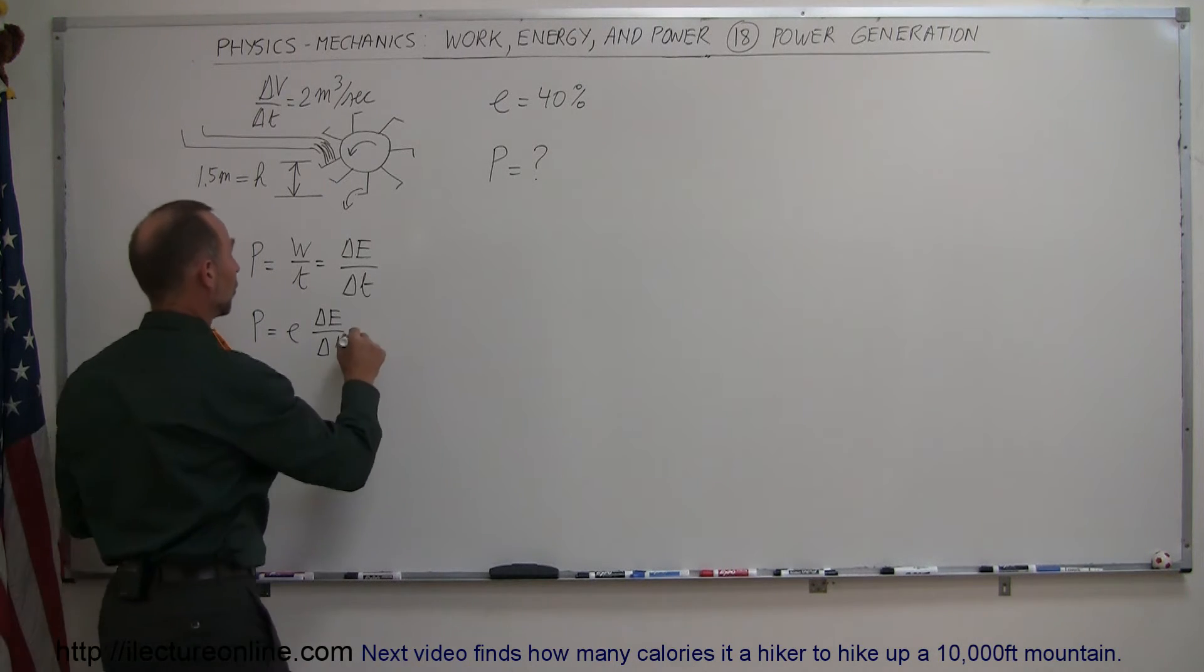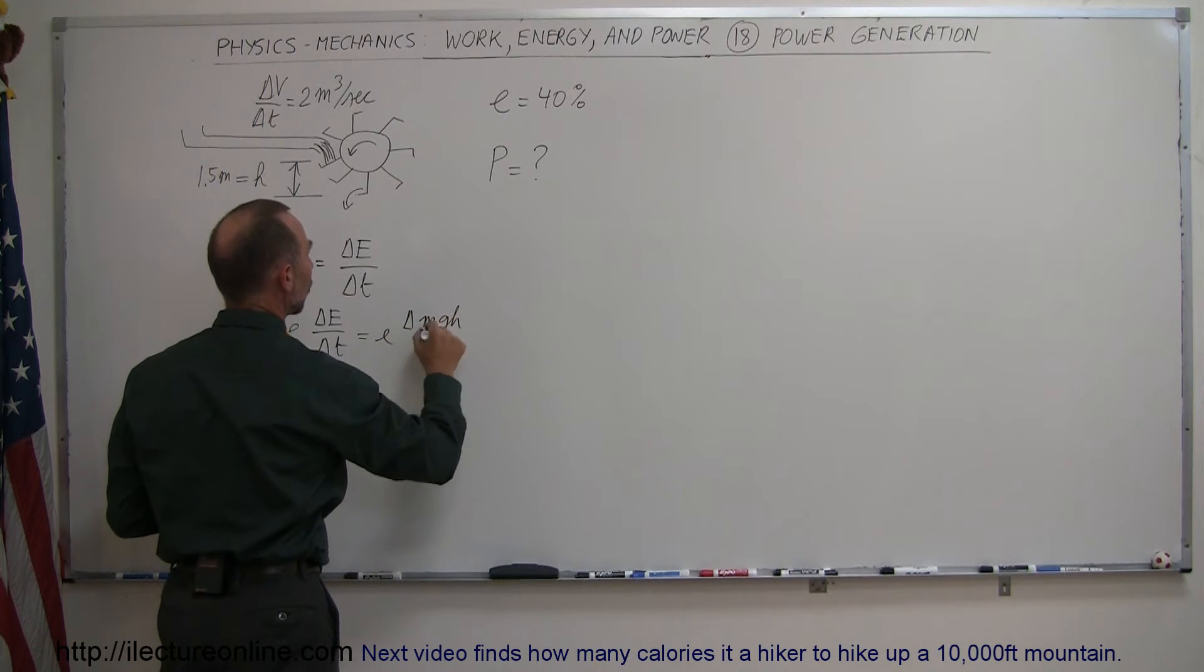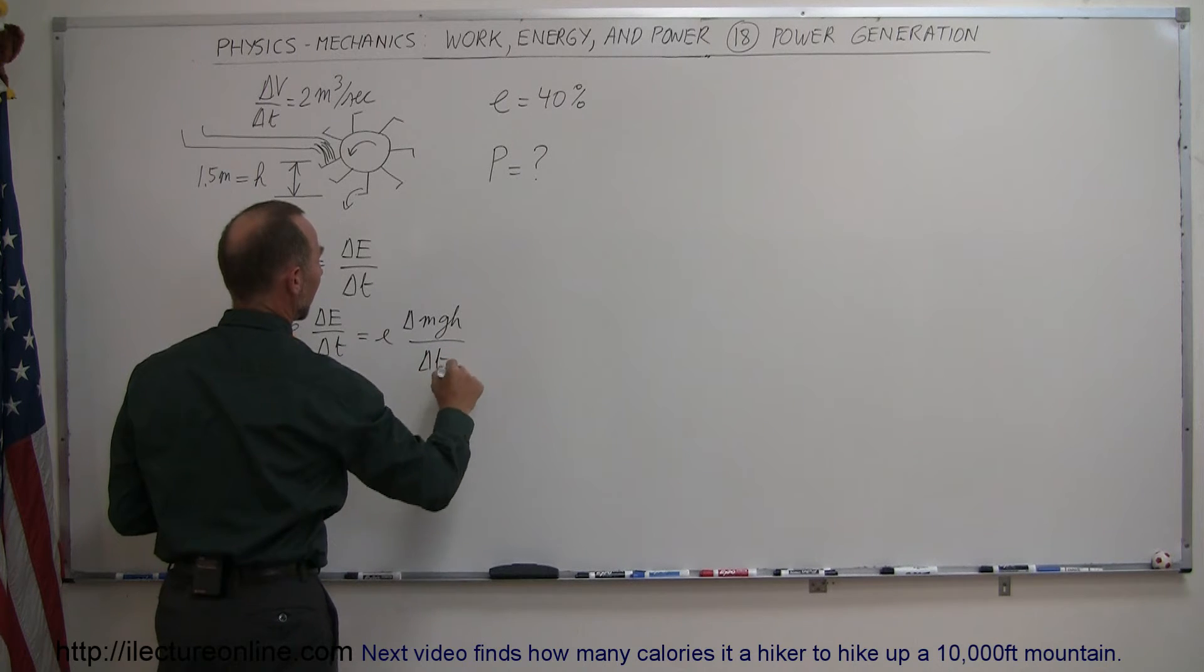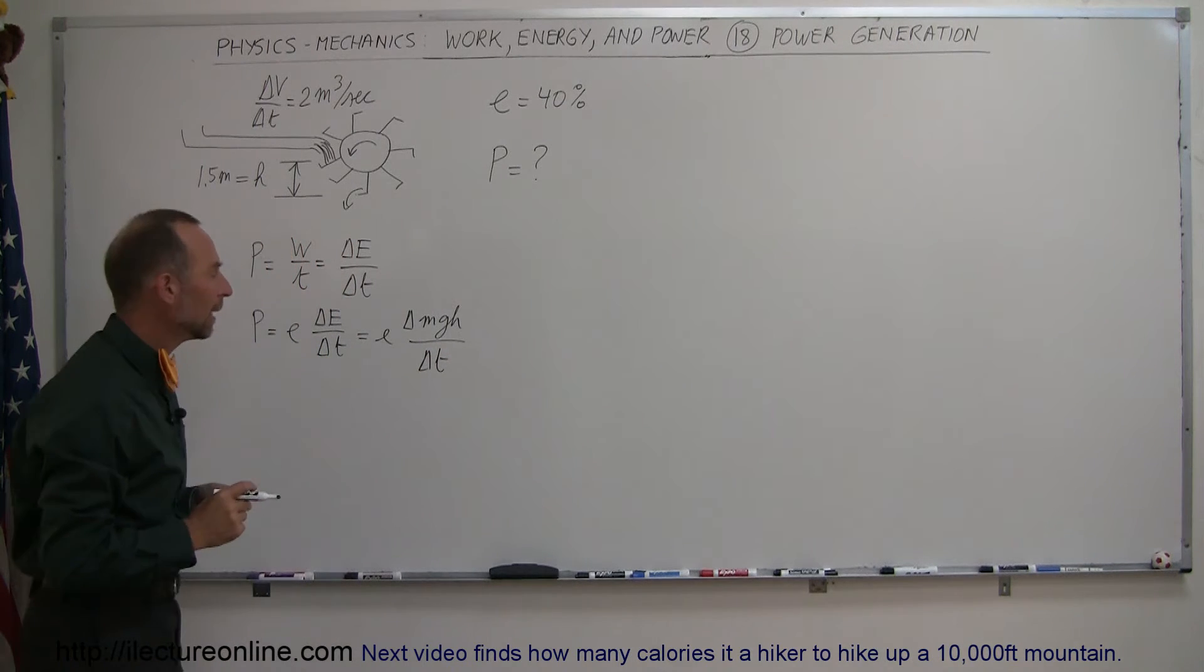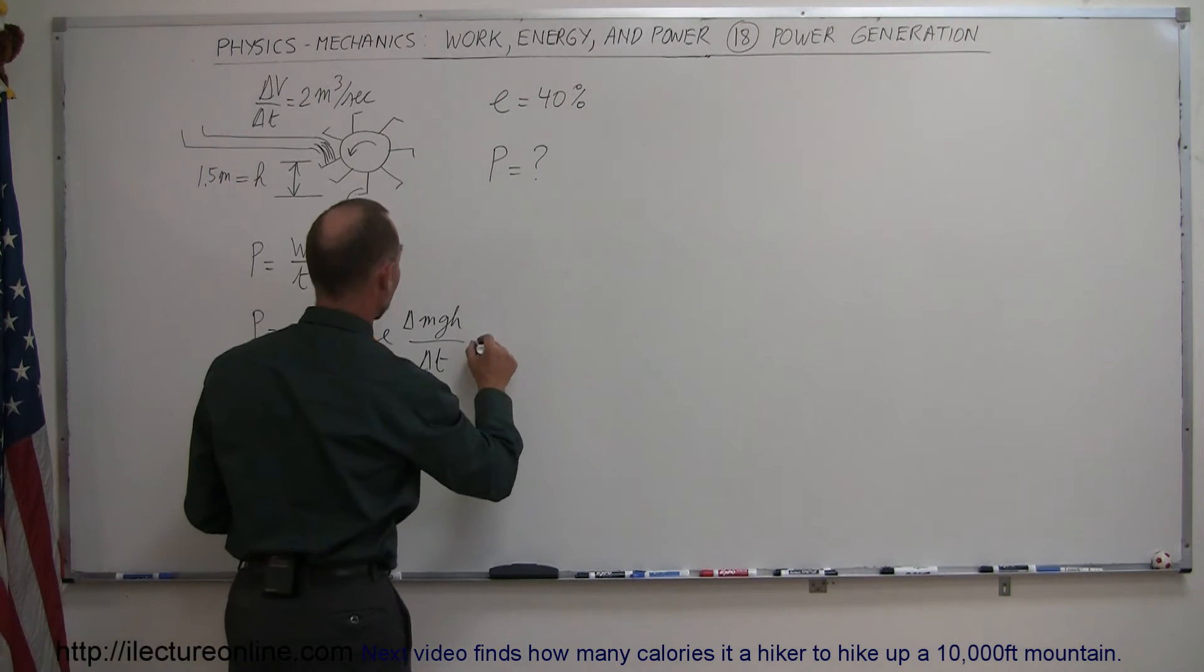Energy, of course, that is equal to the change in the potential energy over time. In this case, the height is known, the mass is known, g is known. I guess everything is known. So we can just simply write it like that.